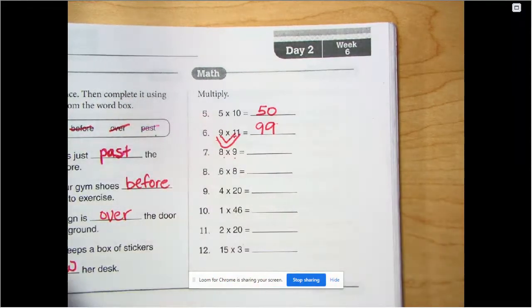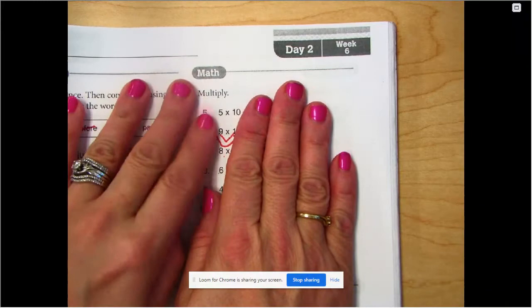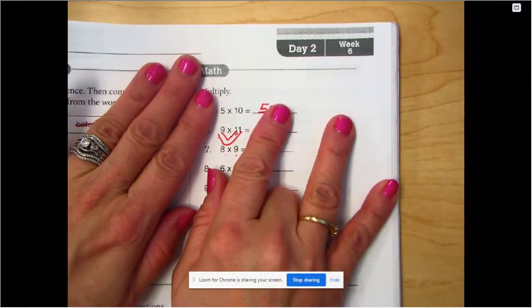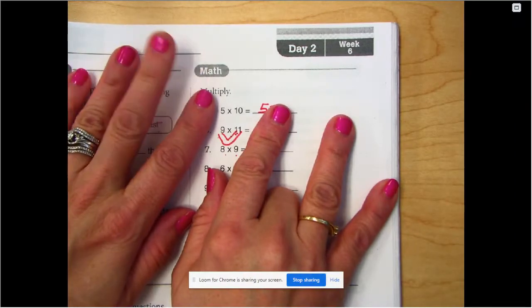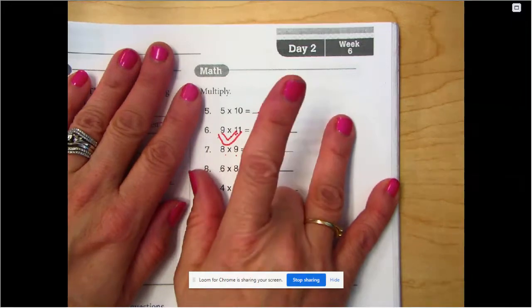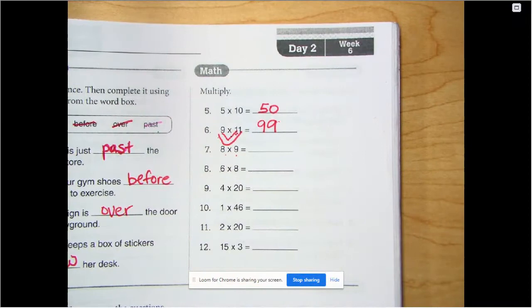Eight times 9. We can do our 9s trick. 1, 2, 3, 4, 5, 6, 7, 8. Put the 8th one down. And let's count our 10s. We have 10, 20, 30, 40, 50, 60, 70, 71, 72. So it is 72.